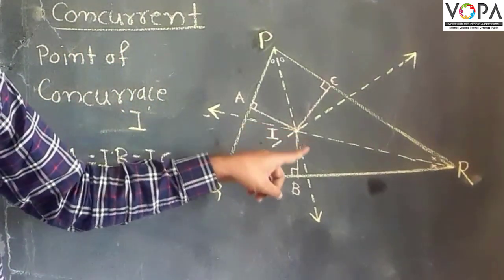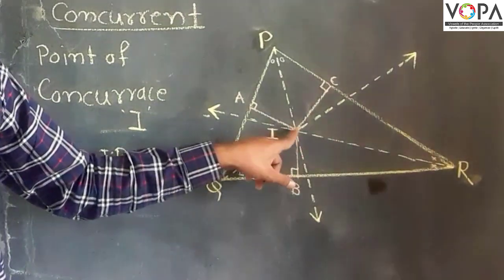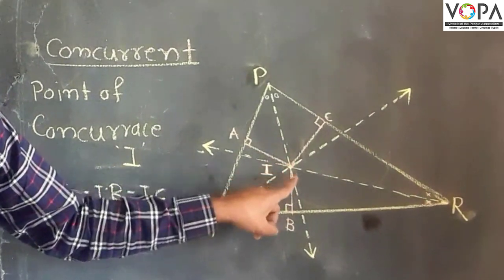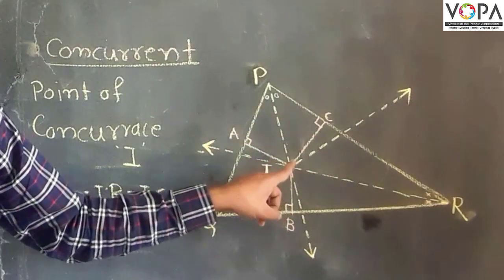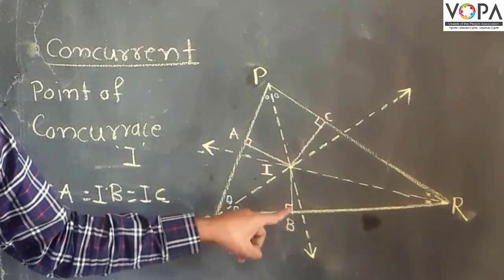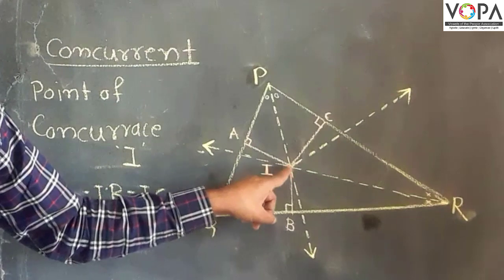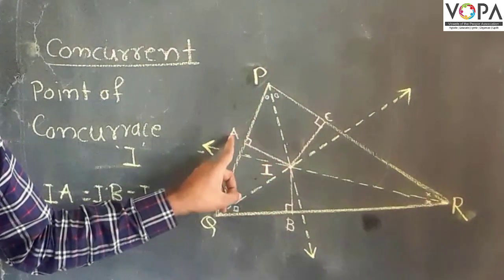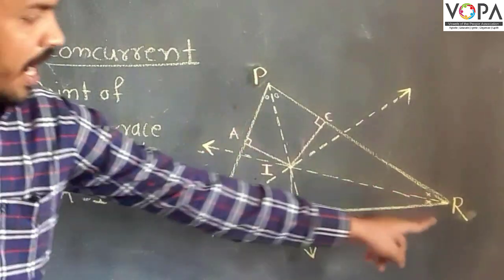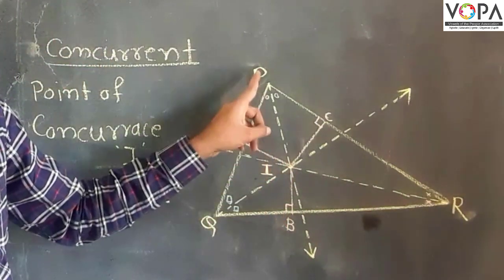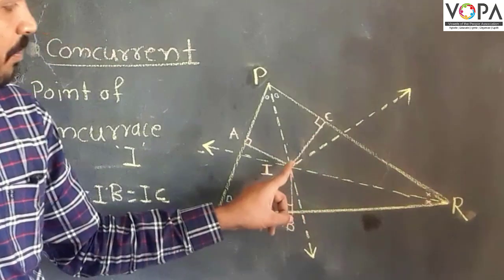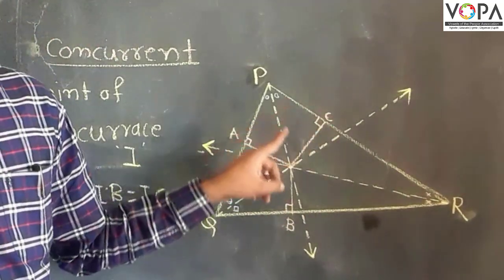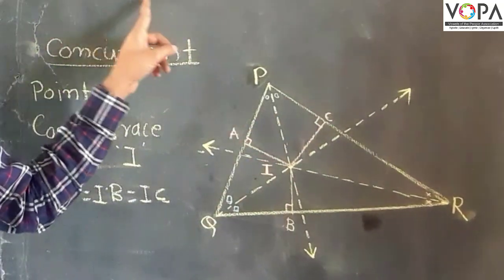Next, from point I, we can draw perpendiculars to the three sides of the triangle. From I to side PQ, there is perpendicular IA; to side QR, there is perpendicular IB; and to side PR, there is perpendicular IC.